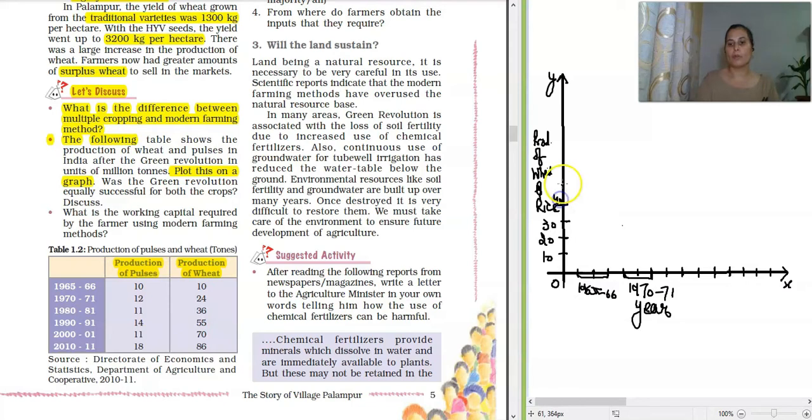So here will go 40, here it will be 50. It is becoming a little messy because I have less space, it's okay, you can adjust. And then 60, 70, 80 and 90. Got it?